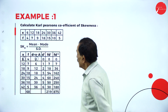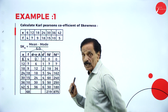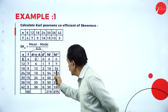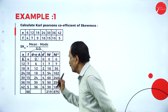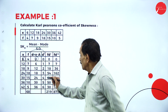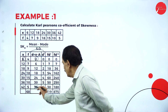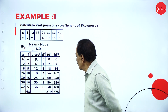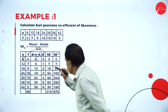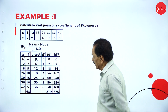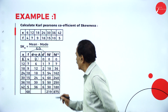Then multiply by frequency to get FD dash. 4 into 0 is 0; 7 ones are 7; 9 twos are 18; 18 threes are 54; 15 fours are 60; 10 fives are 50; 5 sixes are 30. Add the figures - sigma FD dash is 219.